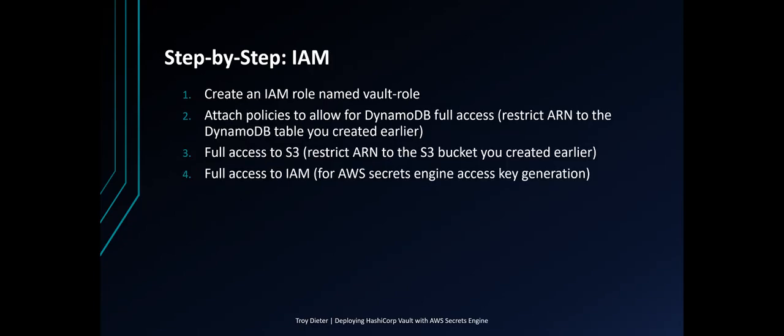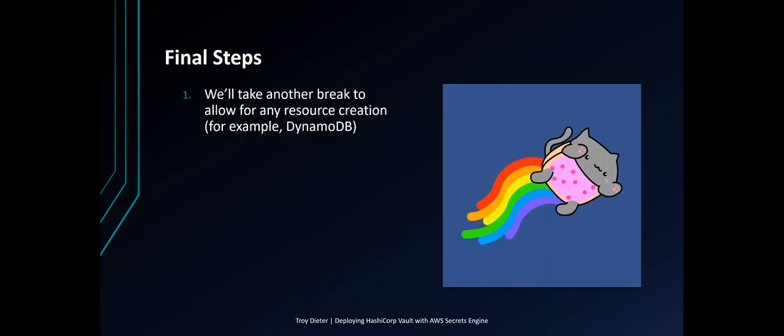This may take about 10 to 15 minutes. Create an IAM role named 'vault-role' and attach policies to allow DynamoDB full access — restrict the ARN to the Amazon Resource Name of the DynamoDB table created earlier. Set full access to S3 — restrict the ARN to the S3 bucket created earlier. Grant full access to IAM for AWS Secrets Engine access key generation. I have a more granular IAM policy attached in the lecture resources.